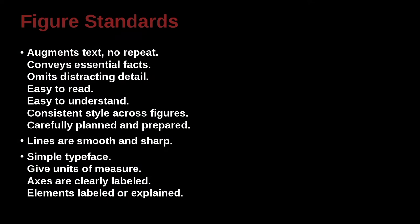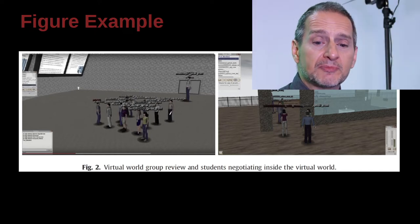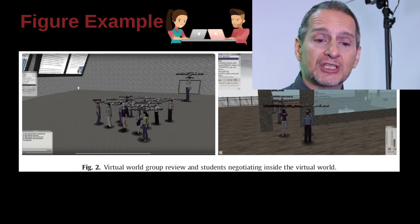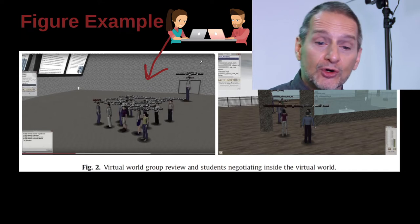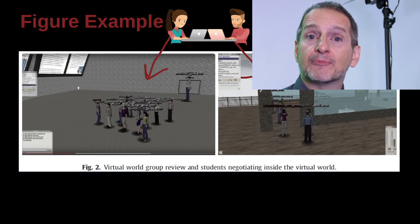Make sure all elements inside the figure are clearly labeled and explained. Here's an example: figure two shows virtual world group review and students negotiating inside the virtual world. It's two screen captures from a research project — you can see the screen capture of a virtual space where people are represented as avatars, the virtual people inside the virtual world. This picture helped explain what we were doing in the experiment: giving students a chance to have class inside this virtual world. A picture is worth a thousand words, and this is a perfect example.